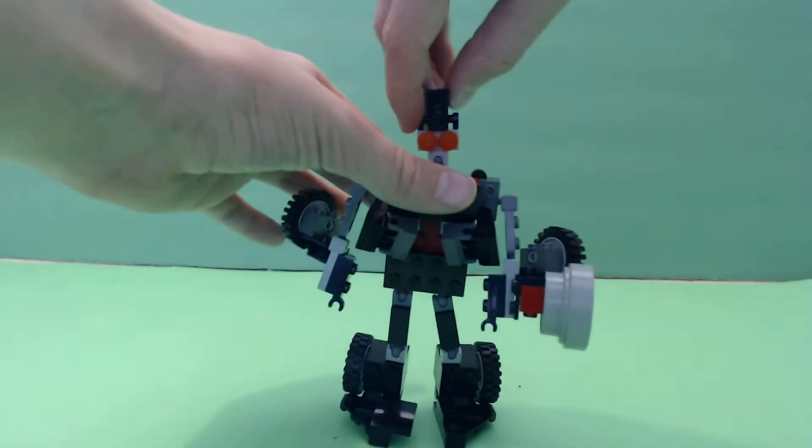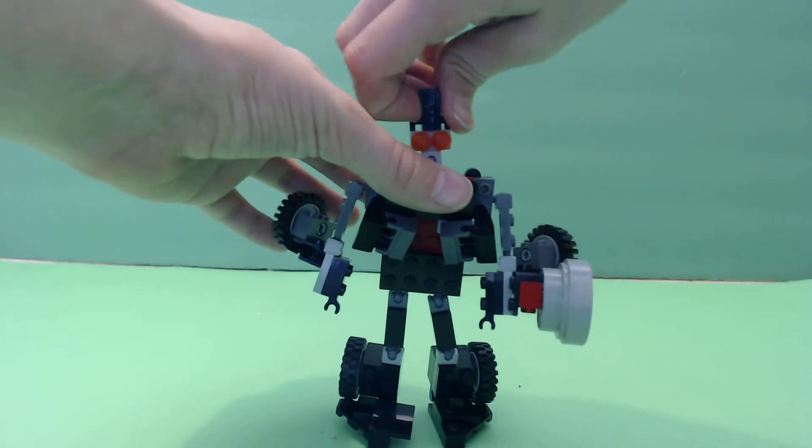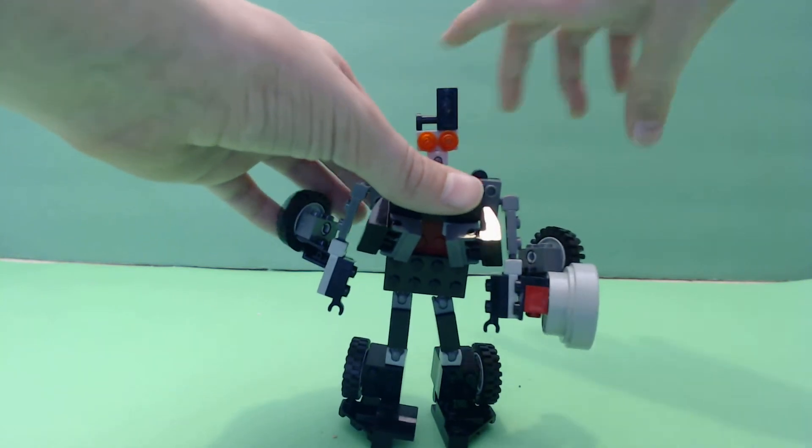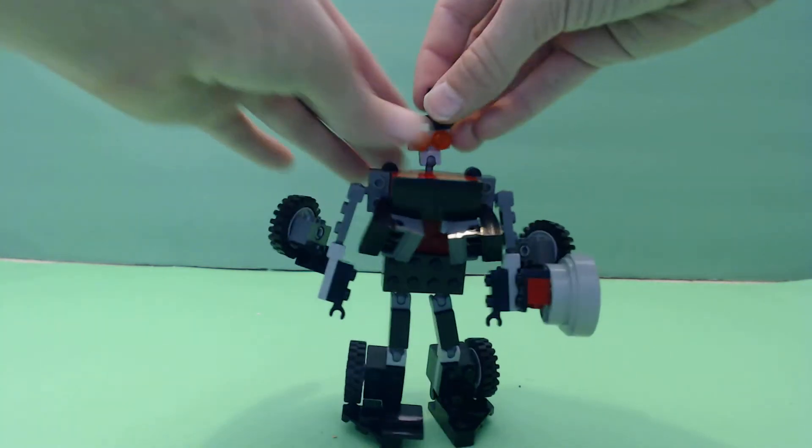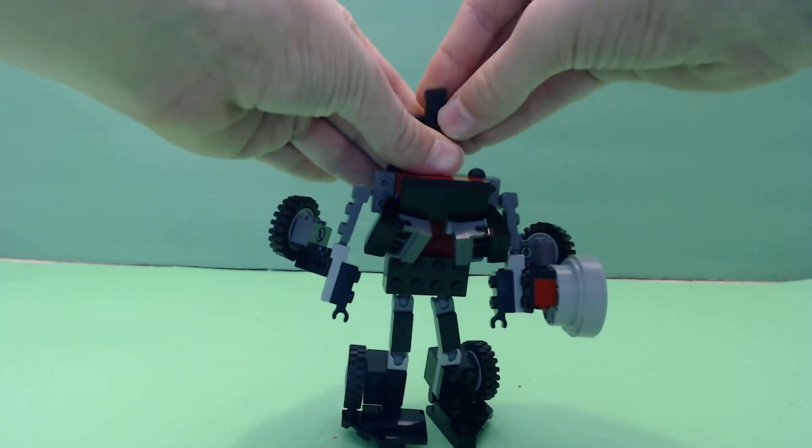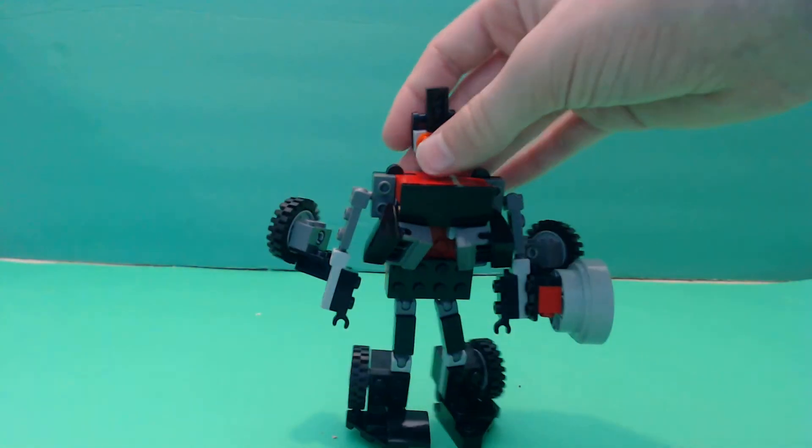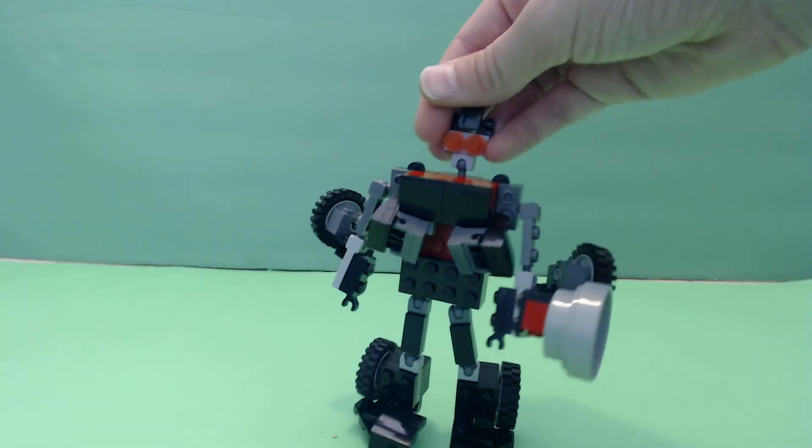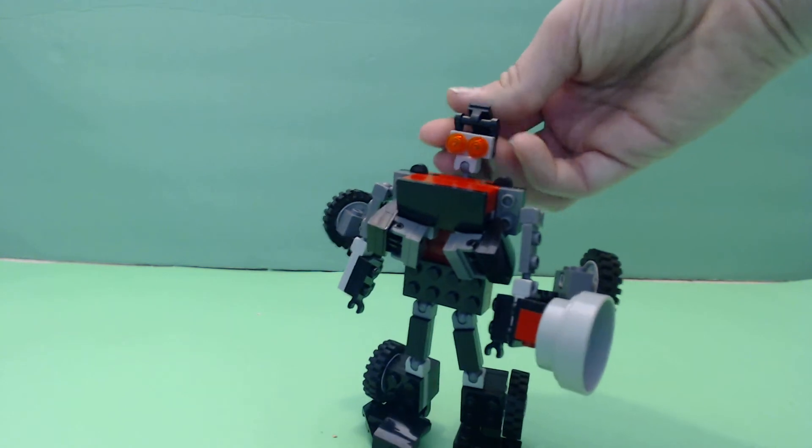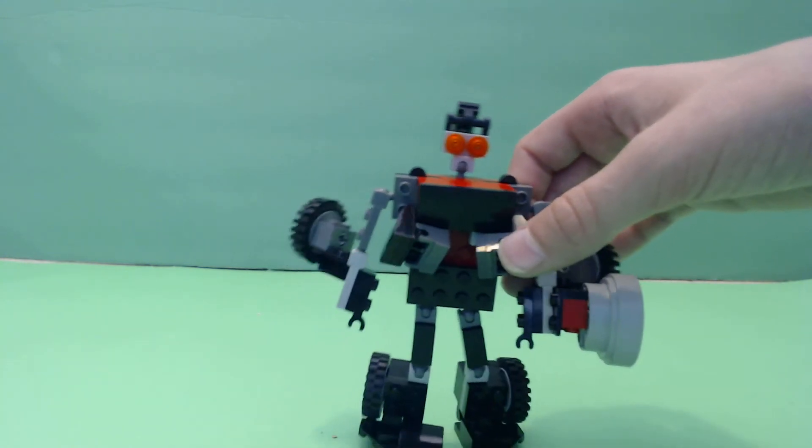The mohawk actually has some movement. You can slide it to the side, or to the other side, if you want him to have like a side mohawk. Or I actually have an alternative mode. You can just flip that down. And then he can have a ponytail. He'd be a she.